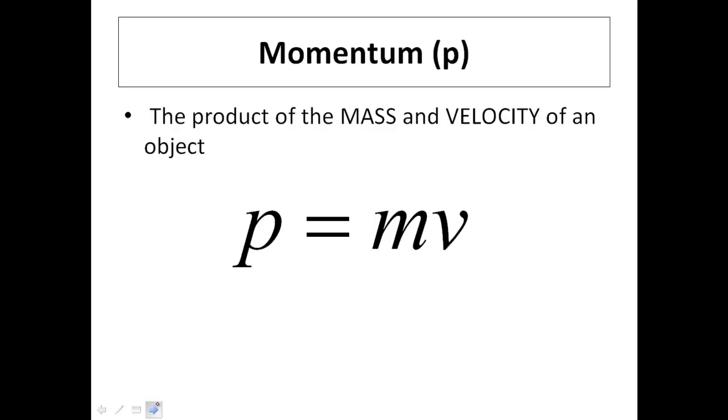Momentum is simply the product of the mass and the velocity of an object. So the two things you need to know in order to solve for momentum are the mass and the velocity of the object. Now, the momentum is represented by a little lowercase p. So that guy right there is my momentum. Momentum equals the mass of an object multiplied by its velocity.